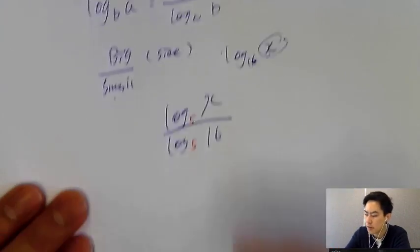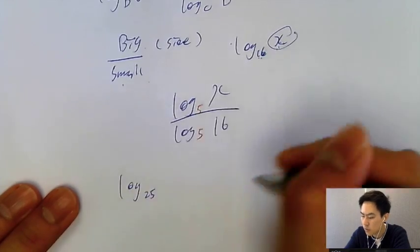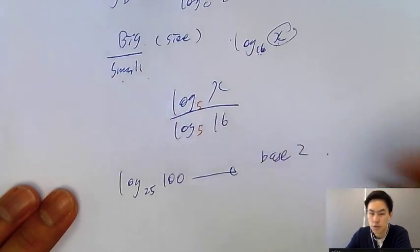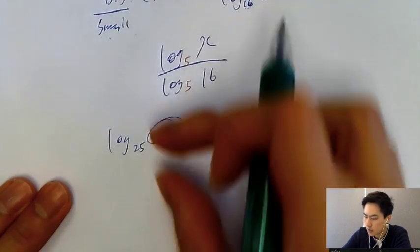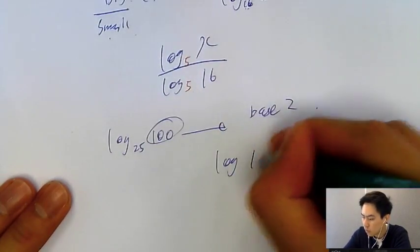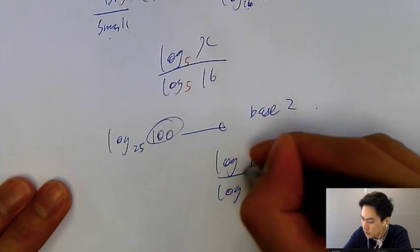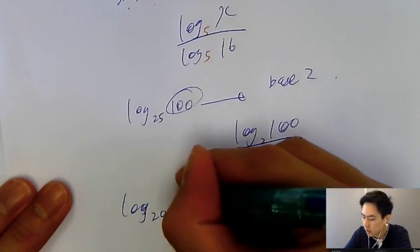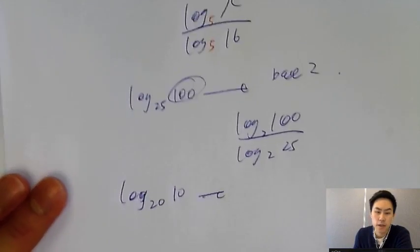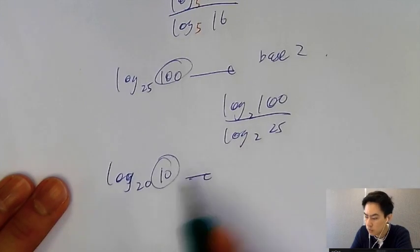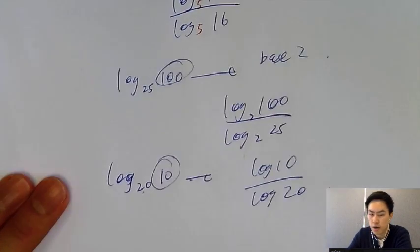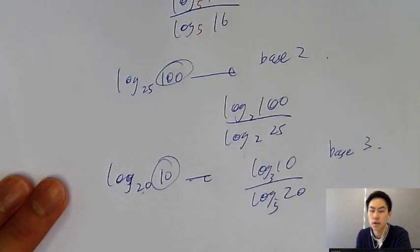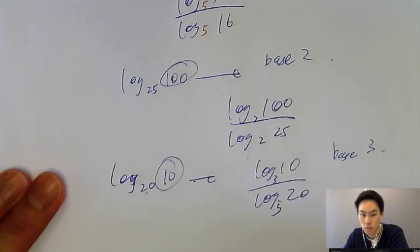More change of base examples. For log base 25 of 100, changing to base 2: 100 is bigger, so log 100 / log 25, both base 2. For log base 20 of 10, changing to base 3: 10 is smaller in size than 20... so log 10 / log 20, both base 3. Big over small — the larger number goes on top, then assign the new base.